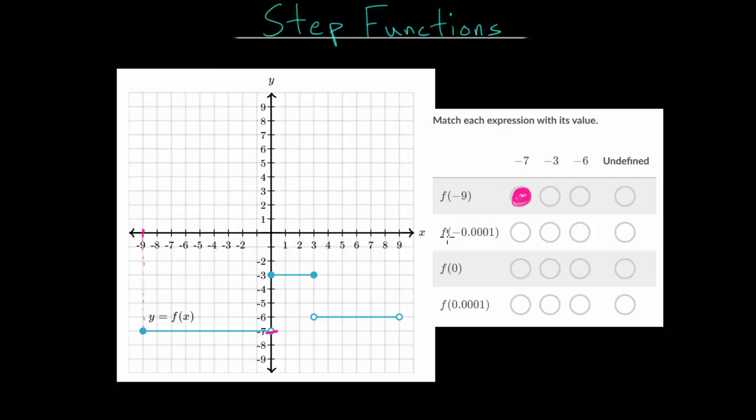Now for f of minus 0.0001, that's just to the left of zero here. I didn't draw that perfectly but it's just to the left of zero. It's in the negatives and that's going to be down here at negative 7. Since if it is exactly zero that would be at negative 3.